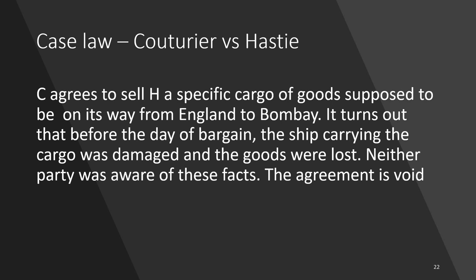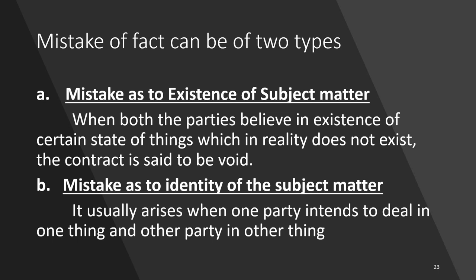Case law: Couturier versus Hastie. C agrees to sell H a specific cargo of goods supposed to be on its way from England to Bombay. Before the day of bargain, the ship carrying the cargo was damaged and the goods were lost. Neither party was aware of this. The agreement is void — both parties were under a mistake as to a material fact.